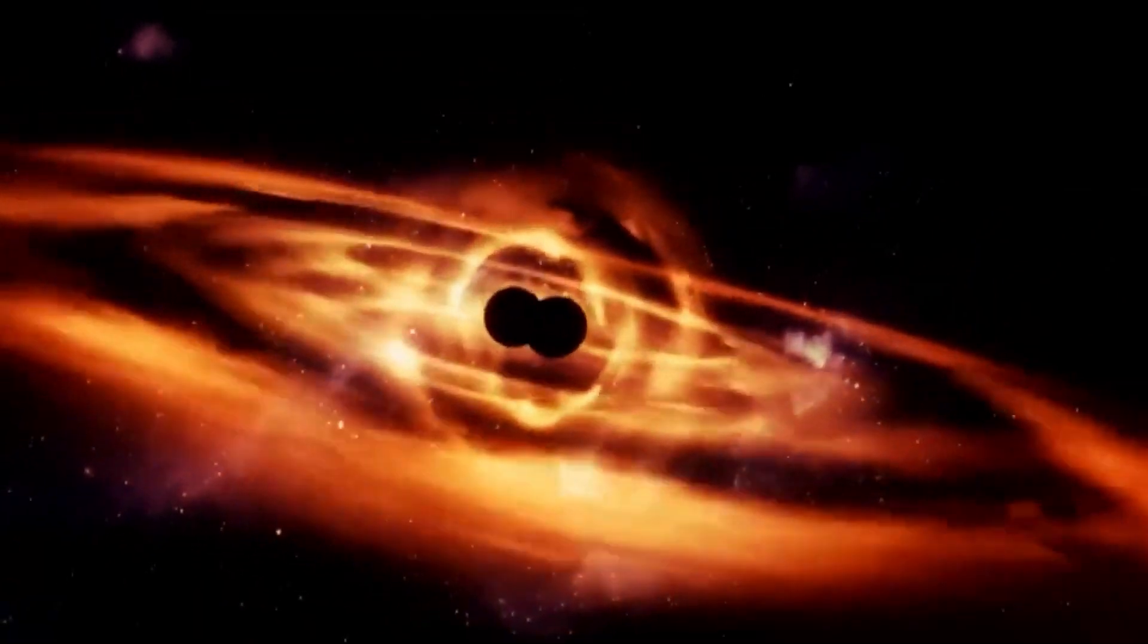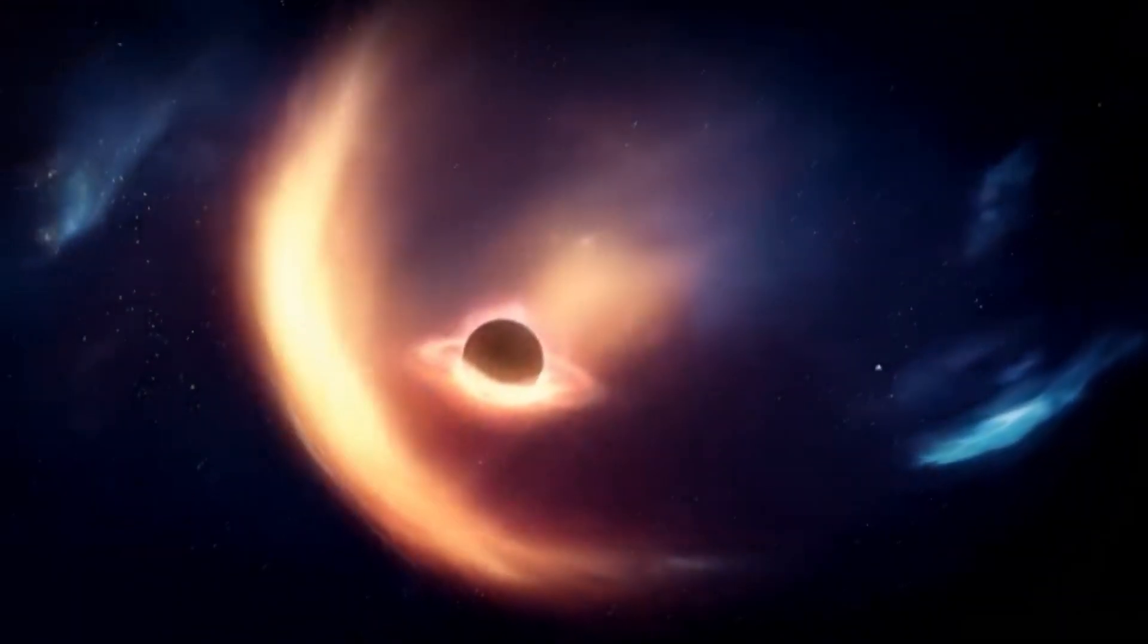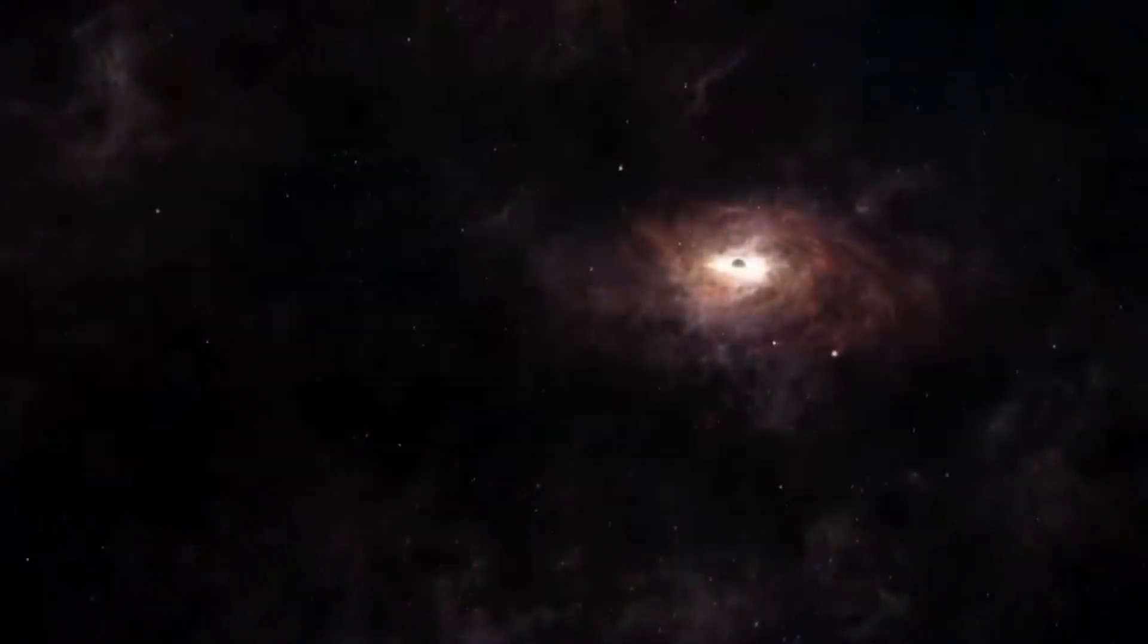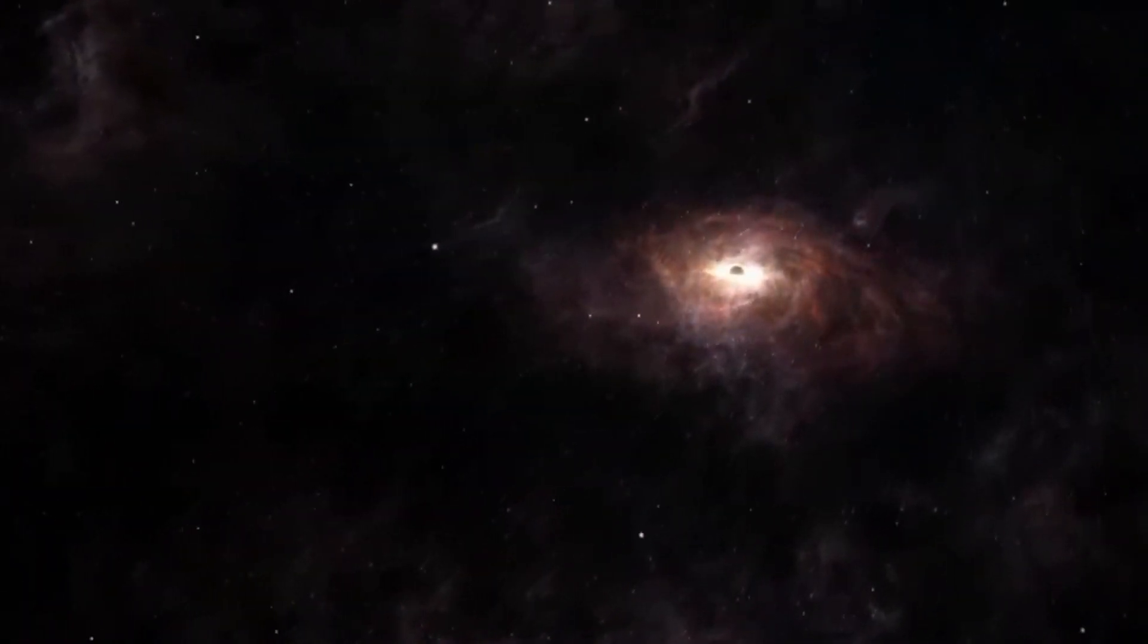The most plausible explanation for the existence of the monstrous black hole Phoenix A is that it formed through the collision and merger of multiple directly collapsing black holes that appeared shortly after the Big Bang. This hypothesis also makes Phoenix A one of the oldest black holes in the universe.